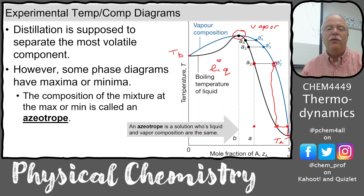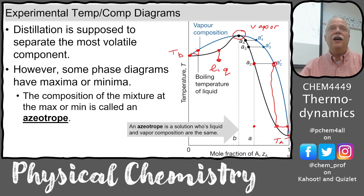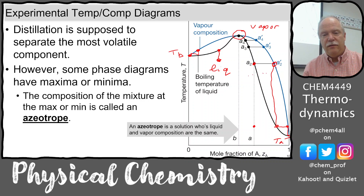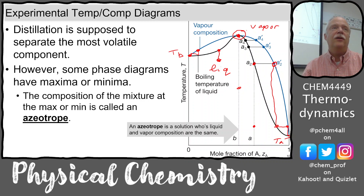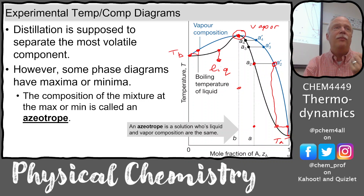But if we're over on the other side, enriched in B, and we boil this solution, it boils a little higher than B, and the vapor that condenses in the fractionating column is enriched in B — so pure B comes out. It depends on how much A or B you have in the pot. If we're right at this pinch point and we boil it, the composition of the vapor and the liquid are the same — that's the definition of an azeotrope. The whole azeotrope comes over and we can't separate A and B.